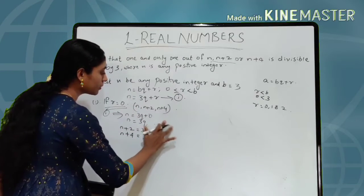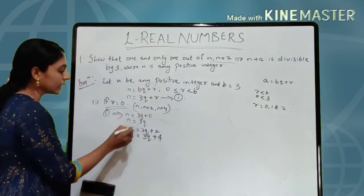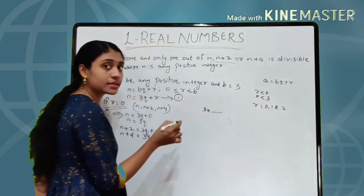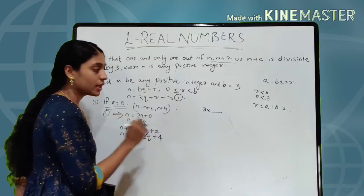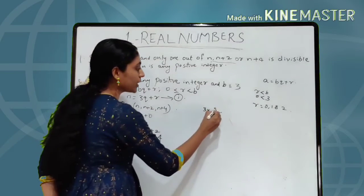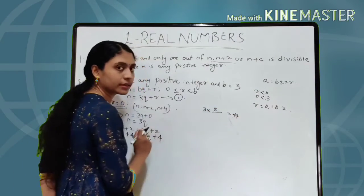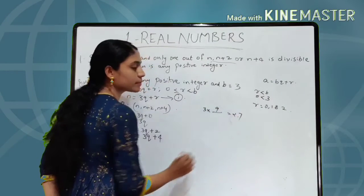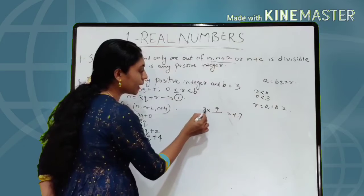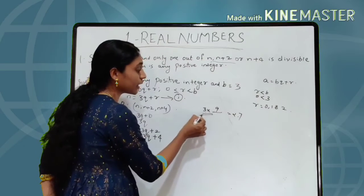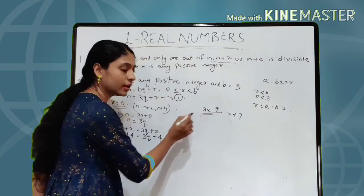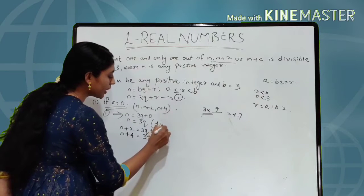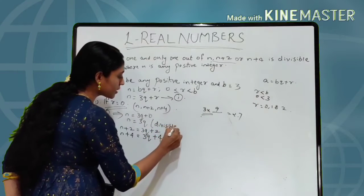Now let's check which of these are divisible by 3. 3Q — any number multiplied by 3 is divisible by 3. For example, 3×8 = 24 which is divisible by 3; 3×9 = 27, also divisible by 3. So 3Q implies it is divisible by 3.